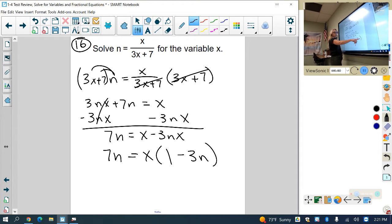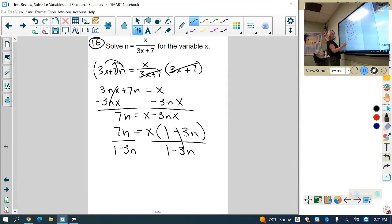And now we're going to go ahead and divide by the parentheses, or like I like to say, the pond, what's left in parentheses so that we can leave x by itself. Cancels out. So I have x equals 7n over 1 minus 3n.